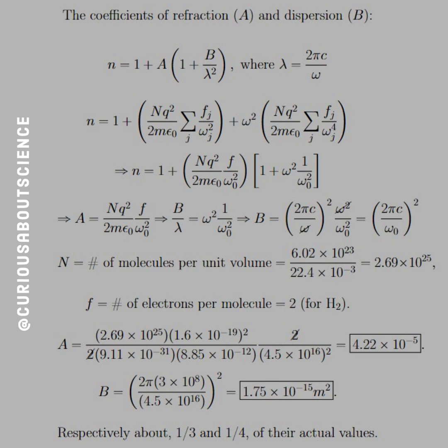Here, N is the number of molecules per volume, so we take Avogadro's number divided by the liters or the volume that we have, and we get this number. F is the number of electrons per molecule, so that's 2 for H2, and so here, we see that A is equal to this, B is equal to that, and respectively, there are about 1 third and 1 fourth of the actual values measured as given in the statement.